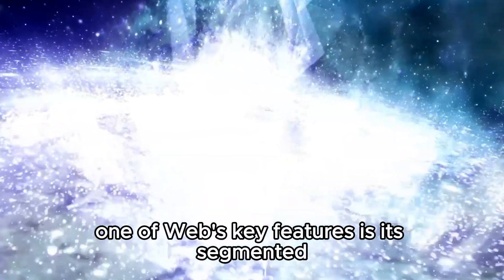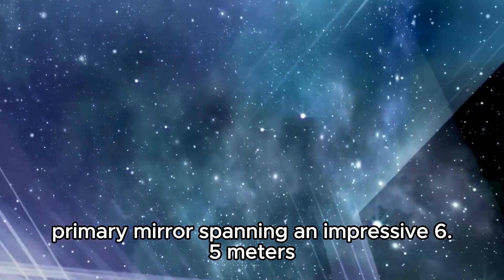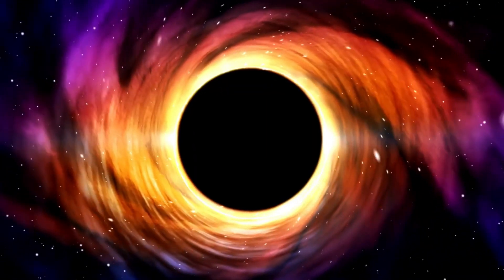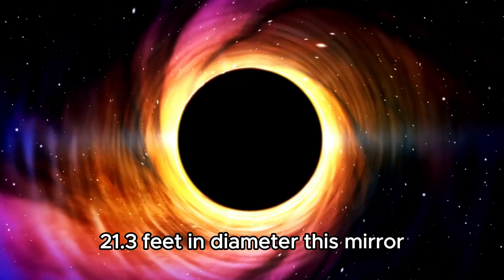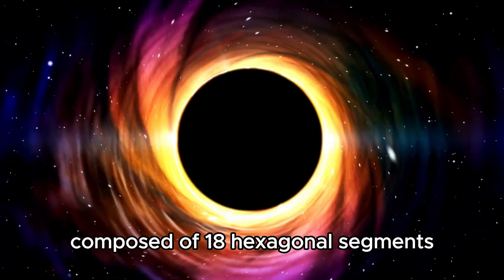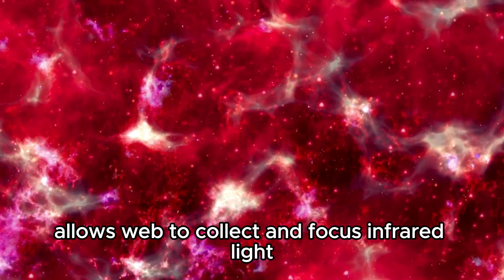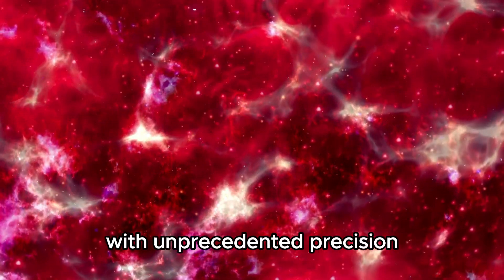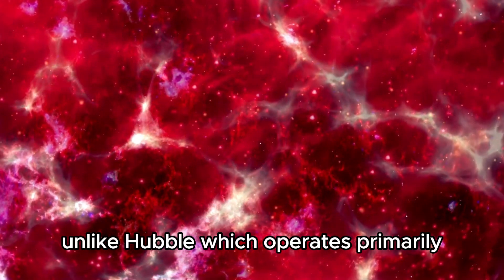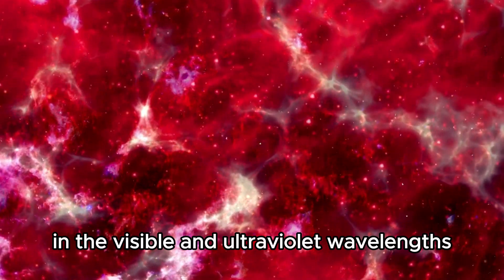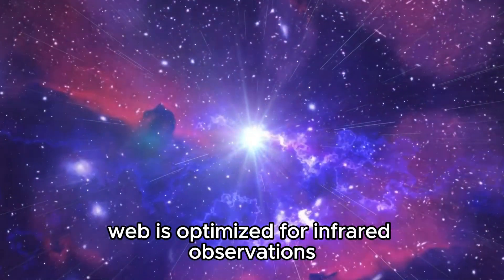One of Webb's key features is its segmented primary mirror, spanning an impressive 6.5 meters, 21.3 feet, in diameter. This mirror, composed of 18 hexagonal segments, allows Webb to collect and focus infrared light with unprecedented precision. Unlike Hubble, which operates primarily in the visible and ultraviolet wavelengths, Webb is optimized for infrared observations.